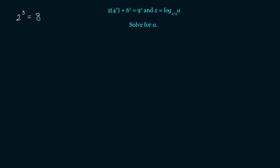2 cubed equals 8. This is an exponential form. Here, 2 is what we call the base, 3 is called the exponent, and 8 is called the argument. In logarithmic form, we would write the same equation as: log base 2 of 8 equals 3.